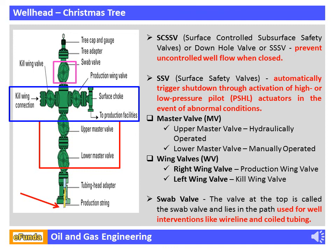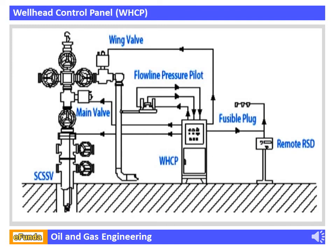The last main part of the well head is the swab valve. The valve at the top is called the swab valve and lies in the path used for well interventions like wireline and coil tubing jobs. Regarding the well head control panel — the Christmas tree valves shall be actuated by the well head control panel with hydraulic supply, and these valves shall be operated through the well head ESD system using electrical solenoid valves or other actuated devices.